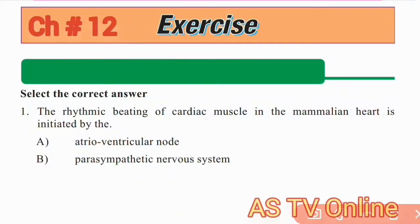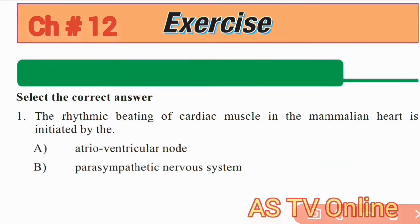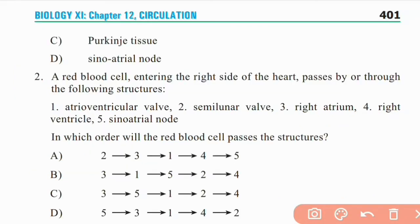Exercise MCQ Series, Chapter 12: Circulation. Question 1: The rhythmic beating of cardiac muscle in the mammalian heart is initiated by — AV Node, Parasympathetic Nervous System, Purkinje Fibre, or Atrioventricular Node? The right answer is the Sinoatrial Node.